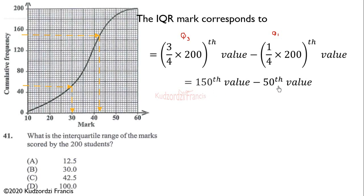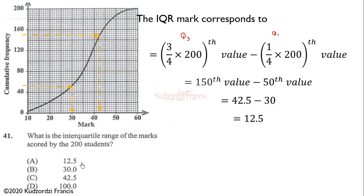One-fourth of 200 gives us 50, and three-fourths gives us 150. The 50 value traced on the graph corresponds to 30. The 150 value corresponds to 42.5 — tracing across and down. Therefore, 42.5 minus 30 gives us 12.5, so the interquartile range is 12.5.